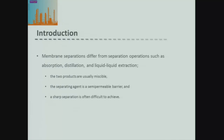The biggest difference is that a sharp separation is often very difficult to achieve. Because we have our membrane, generally all of the materials in the feed can actually pass through the membrane. The separation occurs because the different materials in our feed pass through the membrane at different rates. We can specify the recovery or separation of one component, but our other components just pass through in amounts relative to the rate they actually diffuse through the membrane, so it's very difficult to achieve a sharp separation.